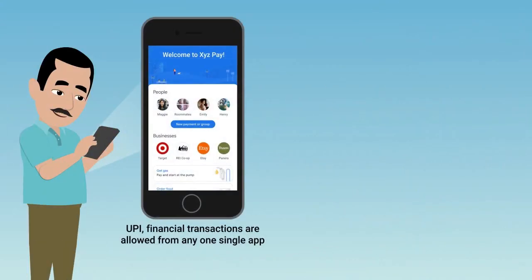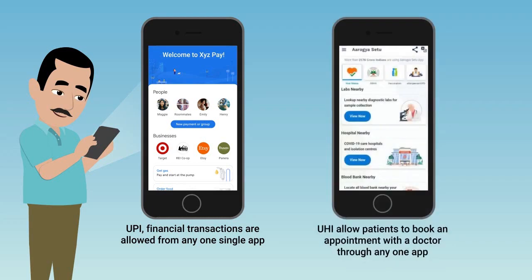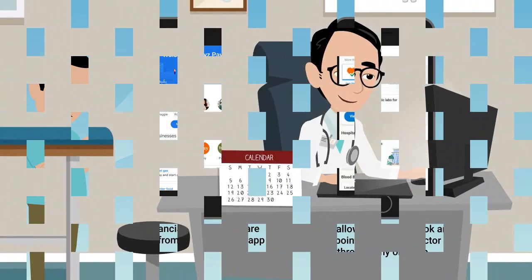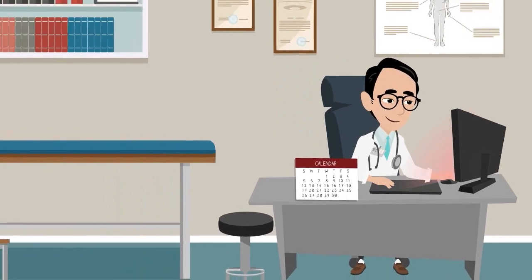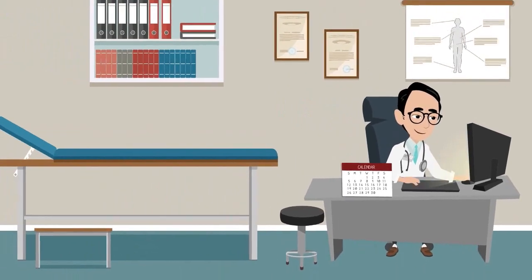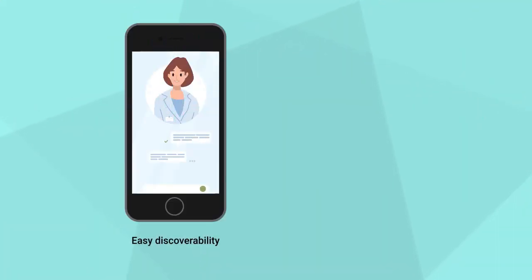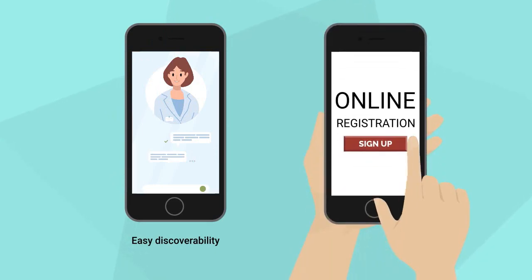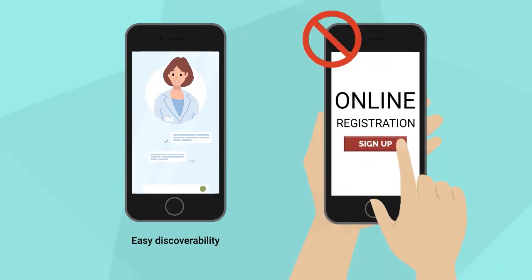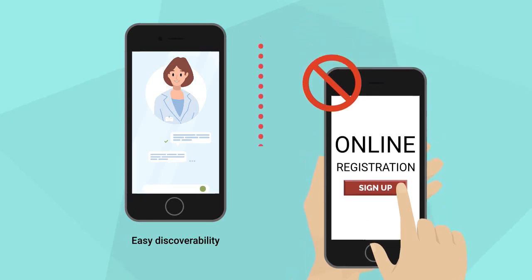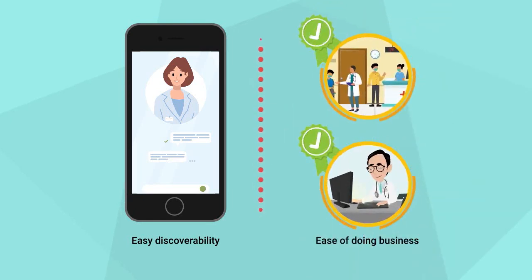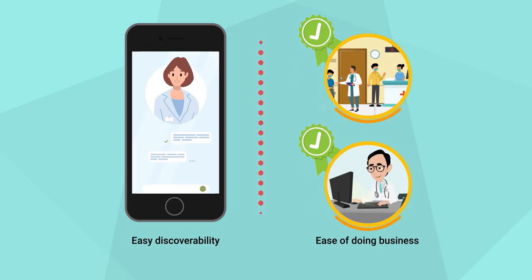Just as in UPI, financial transactions are allowed from any one single app such as Paytm or Google Pay, UHI will allow patients to book an appointment with a doctor through any one app. Some benefits of UHI for doctors include easy discoverability — registration on different health apps will not be required and doctors will appear in more searches — and ease of doing business, as more visibility, discoverability, and authenticity support business growth.